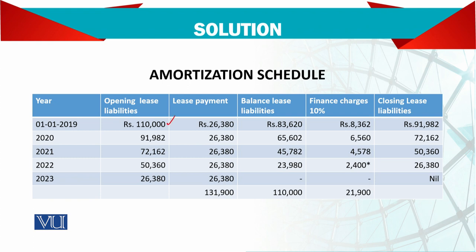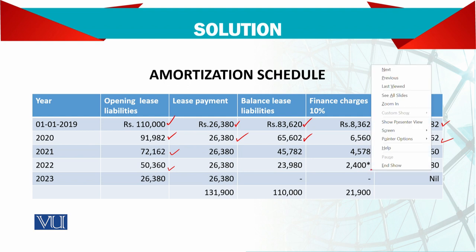Our opening liabilities are 110,000. Since we are making payment in advance, the liability reduces immediately. Interest is charged at 10% on the remaining balance after payment. That gives us the closing liability, which then becomes the next period's opening balance. Again we make a payment, giving the next balancing figure, and interest is charged on that. This continues for all years, noting the interest charge in year 5 rounds to approximately 2,000.